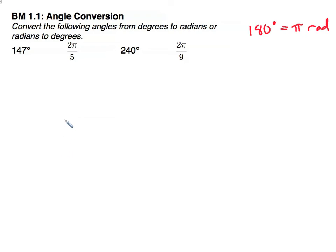Welcome everyone to Mr. Feldstrom's pre-calc cast, working through our benchmark solutions to get us more proficient in those pre-calculus standards. Our first benchmark, 1.1, asks us to do an angle conversion: convert the following angles from degrees to radians or radians to degrees. We will use the fact that 180 degrees is equal to pi radians.